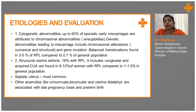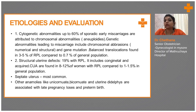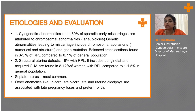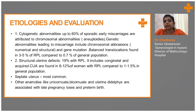Let's go into the etiology and detailed evaluation. Cytogenetic abnormalities: up to 60 percent of sporadic early miscarriages are mainly due to chromosomal abnormalities, that is aneuploidies. Genetic abnormalities leading to miscarriage include chromosomal aberrations and gene mutations. In some people they'll have genetic mutations which cause recurrent RPL. Balanced translocation is found in 3 to 5 percent of RPL, compared to 0.7 percent of the general population.